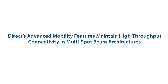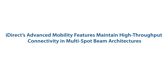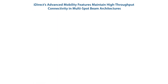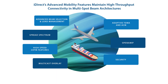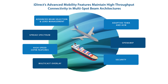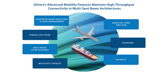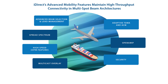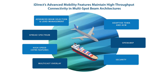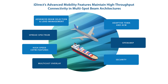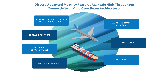Mobility is a key market for Velocity 2.0. iDirect has been an industry leader in mobility for more than 20 years with our Advanced Mobility feature set. Today, we offer automatic beam selection and fast beam switching that enable fast-moving remotes to automatically cross multiple spot beams within a short period of time, maintaining a constant IP session.